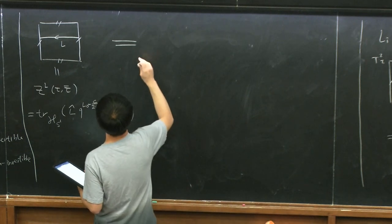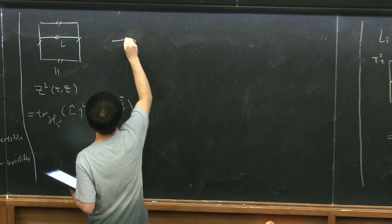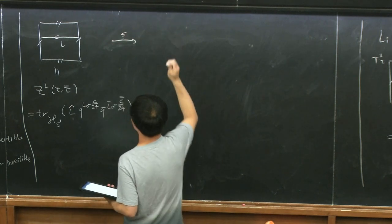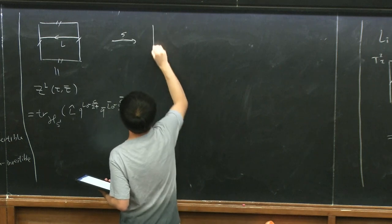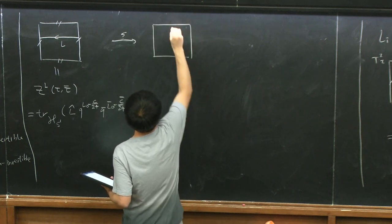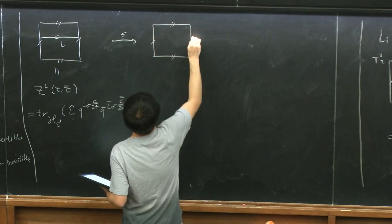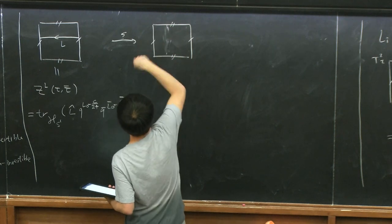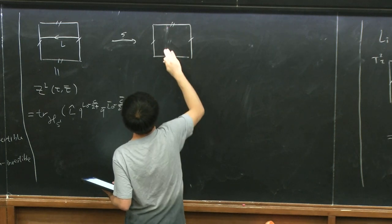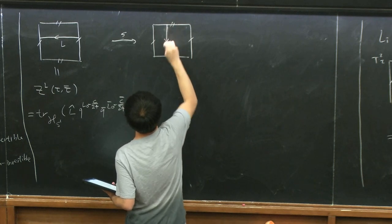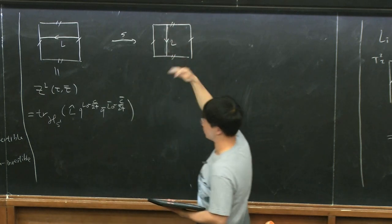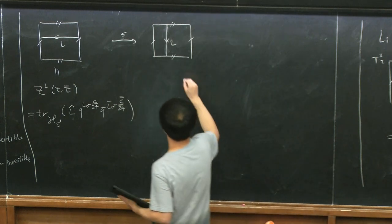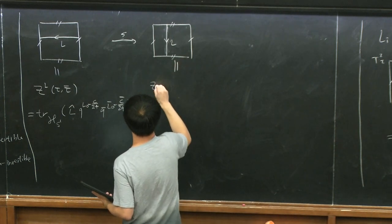I went through this argument in detail because this is how various non-perturbative constraints from fusion category symmetry have been derived in two and higher dimensions — it's the generalization of this game using locality of the path integral. Whichever direction you call time leads to different expressions, and that leads to constraints on what kinds of phases can appear under a symmetric RG flow.